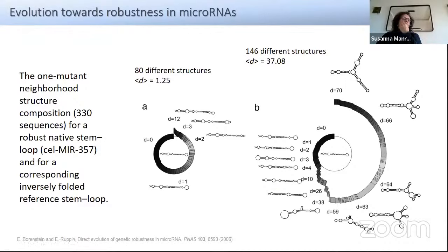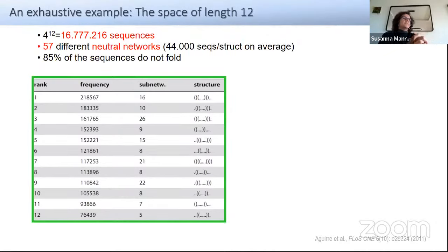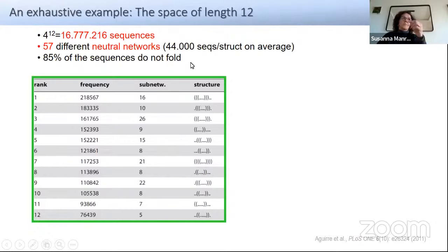Now for independent phenotypes: I've been telling you facts about specific secondary structures, but we're interested in what happens when you consider all phenotypes in a given space. Exhaustive enumeration is not achievable over length 22 or so. This is an example we worked out with a very small space of length 12. It still has almost 17 million sequences to fold. When you do that, you get 57 different neutral networks with 44,000 sequences per structure on average — not small networks. One particular property: 85% of sequences do not fold, meaning most cannot achieve energy below zero — the energy of the unfolded open state.